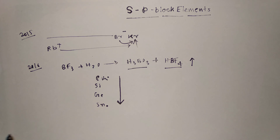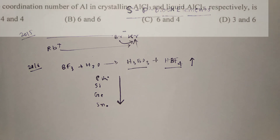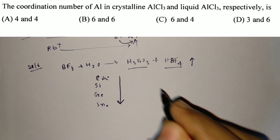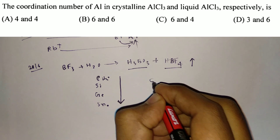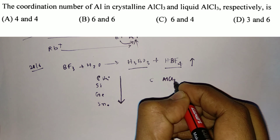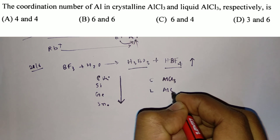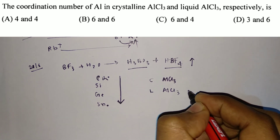The next question from JAM 2016 was about the coordination number of aluminium in crystalline AlCl3 and liquid AlCl3.